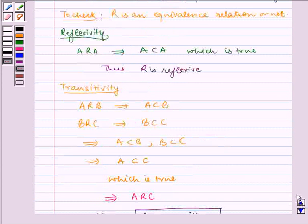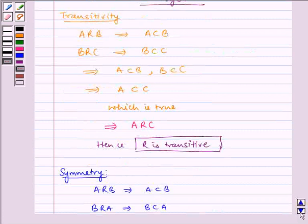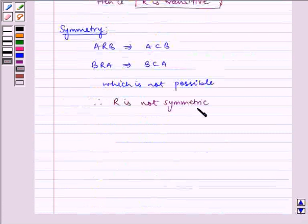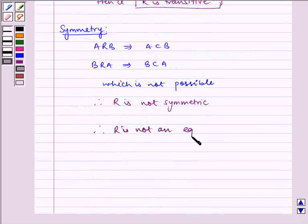Since R is reflexive, R is transitive, and R is not symmetric, therefore R is not an equivalence relation.